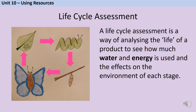A life cycle is a representation of the various life stages that an organism goes through — for example, a caterpillar hatches from an egg, forms a cocoon, and emerges as a butterfly which lays more eggs. In a life cycle assessment, a company analyses the life of a product to see how much water, energy, and raw materials are used at each stage, and what the environmental impact might be due to things like emissions of carbon dioxide.